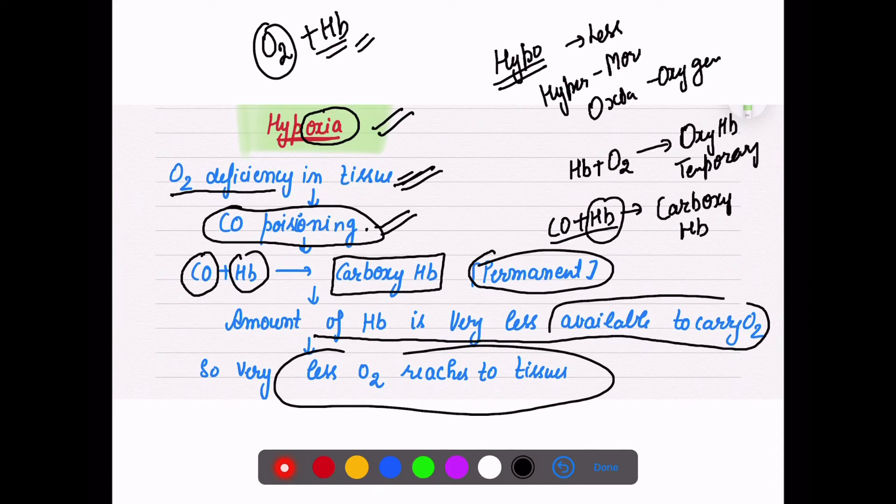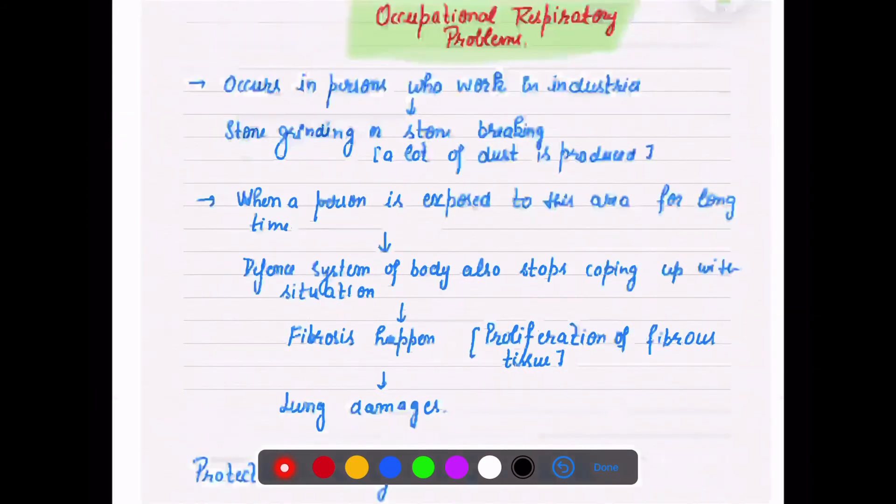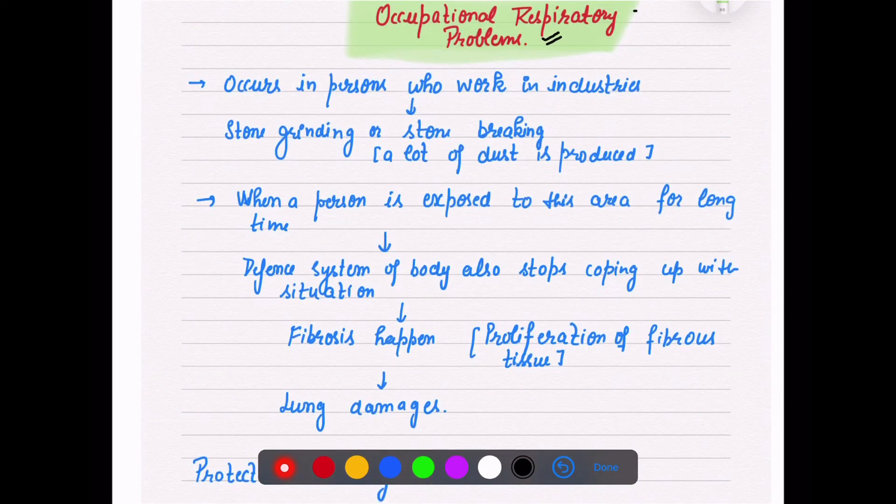The amount of hemoglobin available to carry oxygen will be very less. So very less oxygen will be able to reach the tissues and this condition is called hypoxia - oxygen deficiency in the tissues, also known as carbon monoxide poisoning.